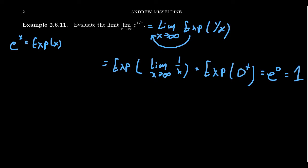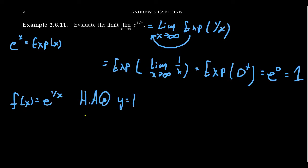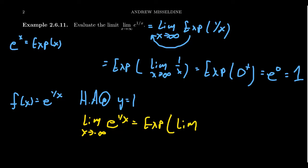We compute e to the 0, which equals 1. So f of x equals e to the 1 over x has a horizontal asymptote at y equals 1. Taking the limit as x approaches negative infinity gives the same calculation — the limit of 1 over x is again 0, and e to the 0 equals 1. So this non-rational function has a horizontal asymptote of y equals 1 on both the left and right sides of its graph.